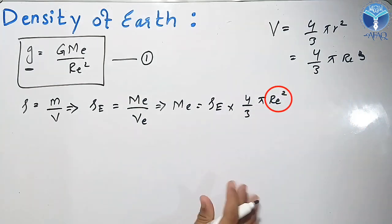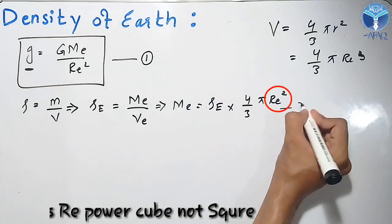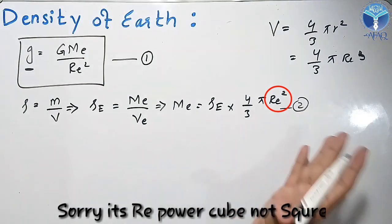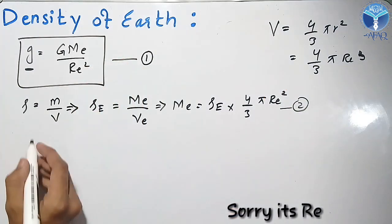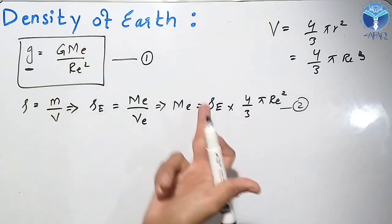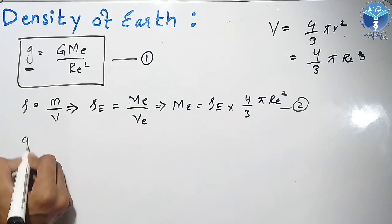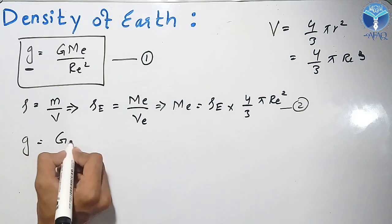Now let's put equation number 2 into equation number 1. I will put the mass of Earth. So g = GMₑ/Rₑ².